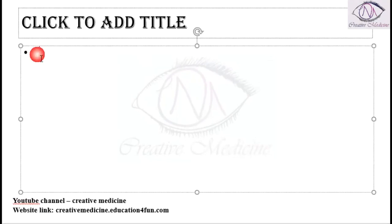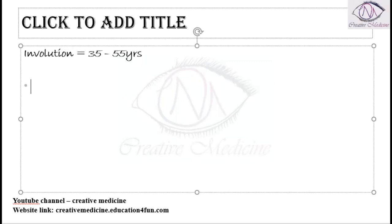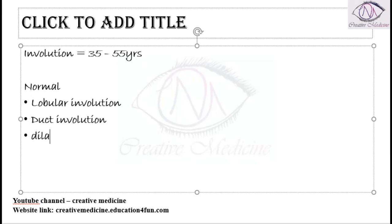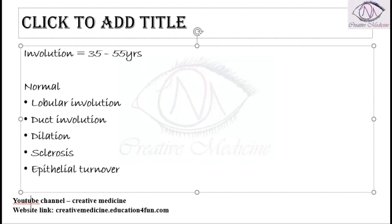Then we have Involution, which mainly covers 35 to 55 years of age. In involution, normally there is lobular involution, duct involution, dilatation, sclerosis, and epithelial turnover. These are normal changes in involution.